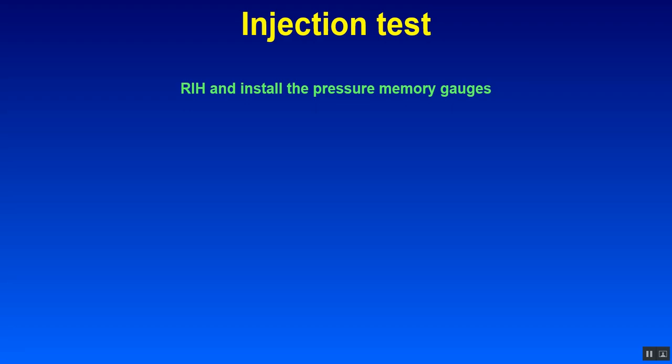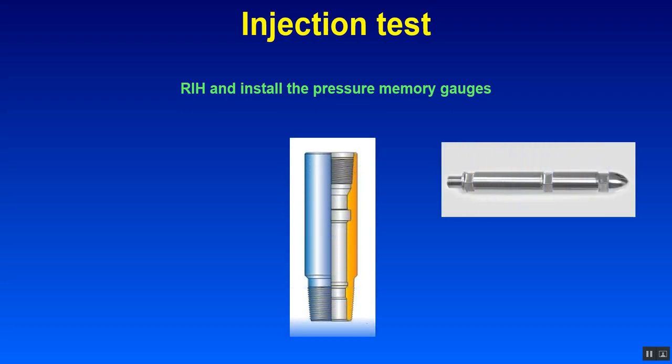Actually, the normal procedure for injection test is to run in holes with downhole memory gauges. Usually it's two memory gauges in tandem and install it in what we call R-nipple for the completion or injection completion. Sometimes we call X-nipples. It depends on the completion vendor, either Baker Hughes or Halliburton or whatever.